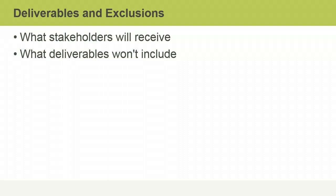You would only list product exclusions that might naturally be expected as a feature of the product. For example, if you are creating brochures, you may note as an exclusion that the brochures will not be printed in color. The decision to exclude color printing may have been made in order to meet a cost constraint. As time goes on, we may forget conversations we had regarding product features, so by noting exclusions, you may avoid misunderstandings later.